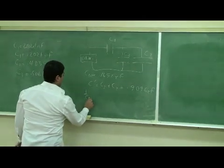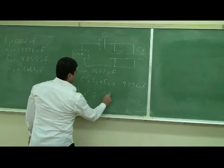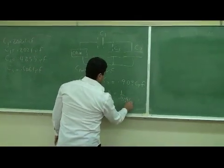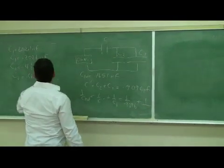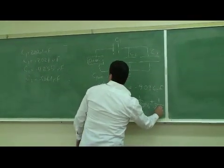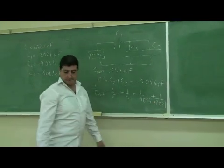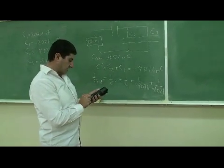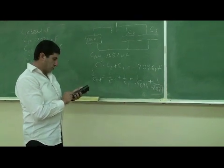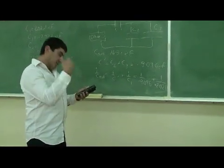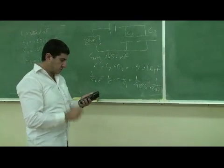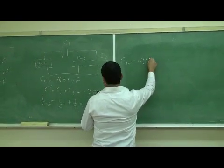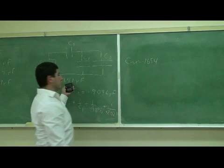1 over C total is 1 over C prime plus 1 over C1. So 1 over 0.9096 plus 1 over 0.2021. And then we reciprocate that. C total is 0.1654. Very close to what we got here.